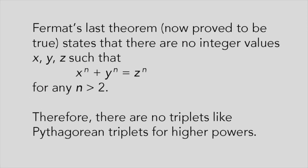Although there's an infinite number of Pythagorean triplets, Fermat's last theorem, which is now known to be true, ensures that there are no triplets for higher powers. For example, there are no integer values ABC, such that A cubed plus B cubed equals C cubed.